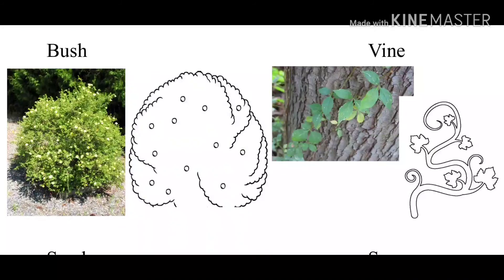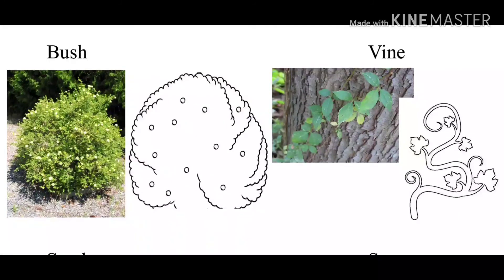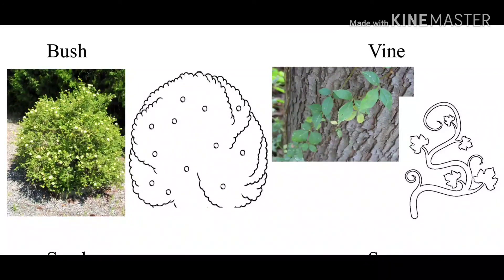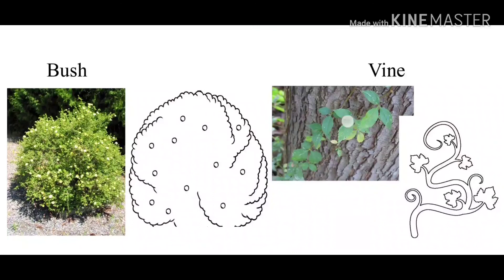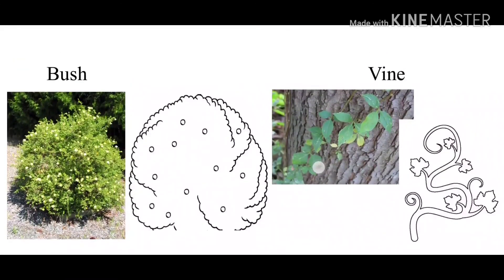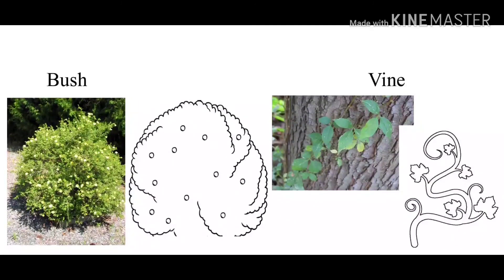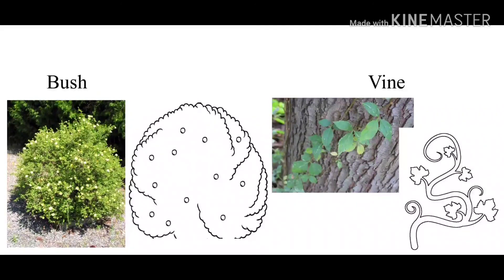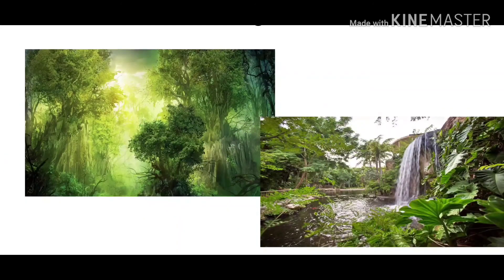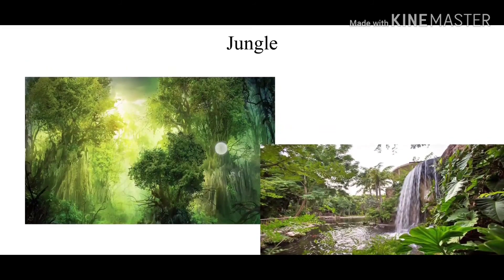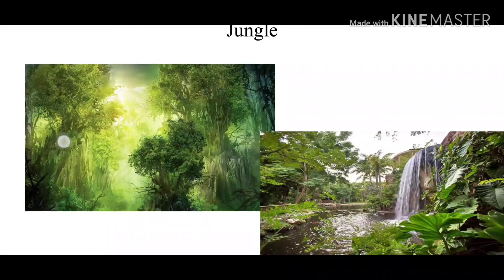So, we call this a bush. Vines are sort of like snakes that like to grow up trees. So, we call these vines. Can you guys find the vines in this picture? There are some vines going up the tree, and here are some vines.